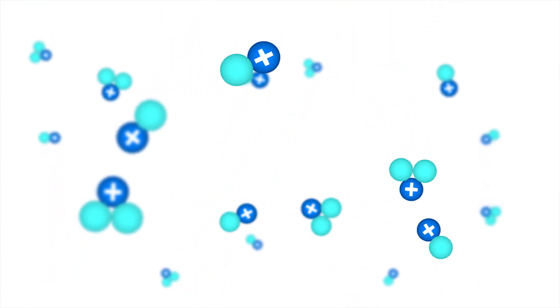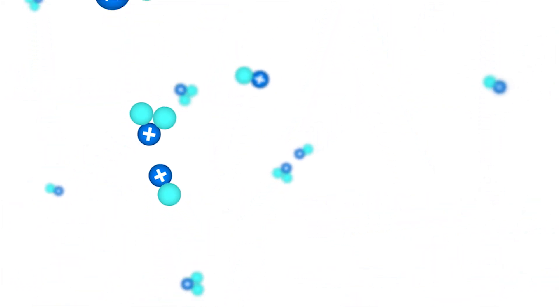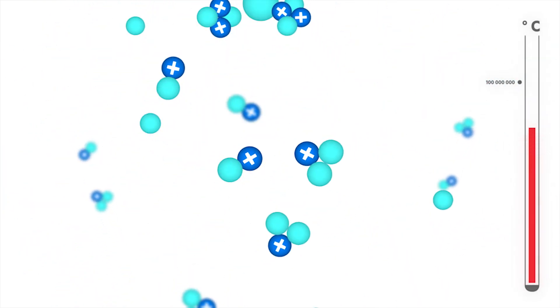For fusion reactions to occur you need to slam the particles together very quickly and the particle speed is a function of their temperature. So the hotter they are the faster they travel, the quicker they slam together, and then the more you have, the higher the pressure and the more fusion reactions you can get.